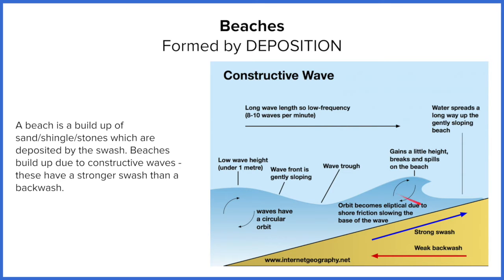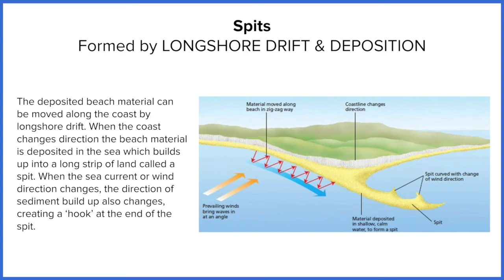The opposite is destructive waves, which take more sand off the beach. They have a stronger backwash and a weak swash, so more sediment is carried back into the sea. Destructive waves have a short wavelength — lots of waves coming in at the same time — and a high wave height, meaning more waves are hitting the beach and taking more sand off at the same time.